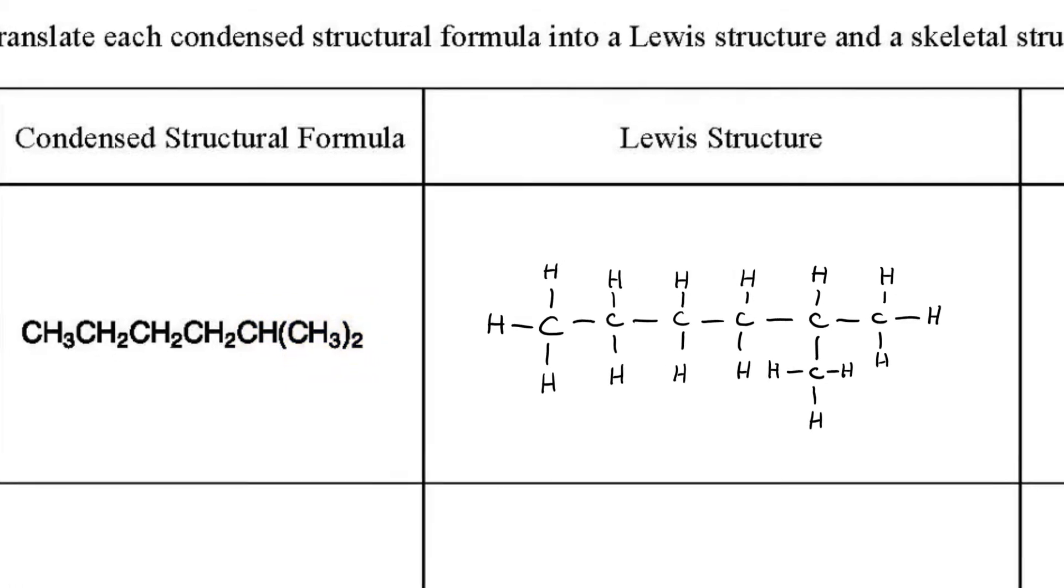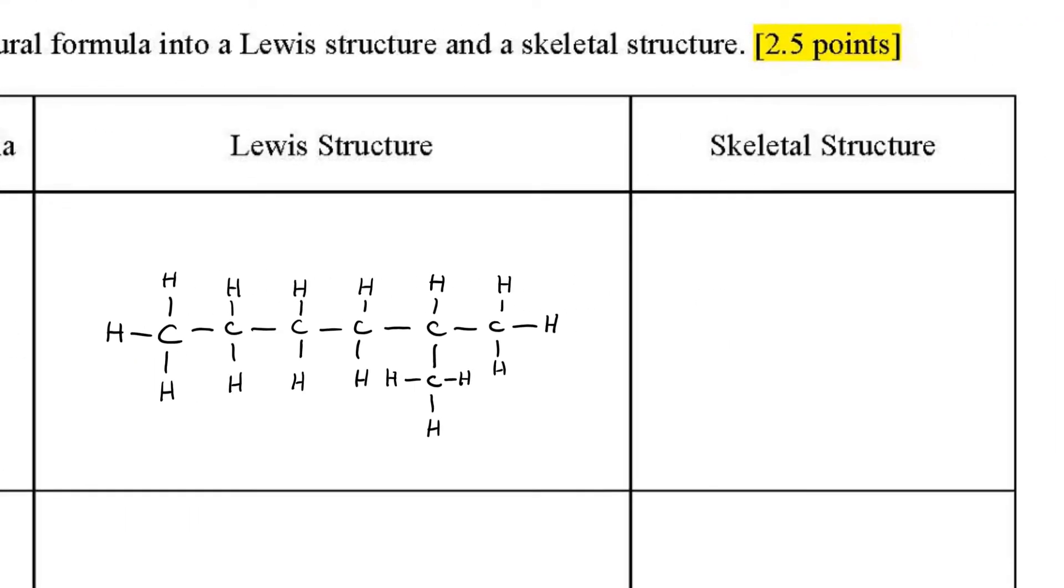Now we'll work on drawing a skeletal structure for the molecule. The longest carbon chain in this molecule is six carbons long. I'm going to start by drawing that. Remember, carbons are assumed present at the ends of unlabeled lines, and at kinks in the structure, so this is a six-carbon chain. Now we just have to add the pendant CH3 group to complete the molecule. And that finishes this example.